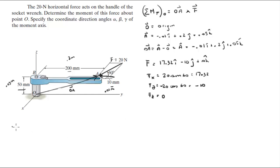So these values are 17.32 and negative 10. So the Cartesian vector form is 17.32i minus 10j plus 0k. So now you know that the moment that the force creates about O is given by the cross product of vector OA and F in this order.